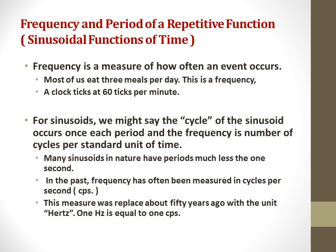Frequency is a measure of how often an event occurs. Most of us eat 3 meals per day. This is a frequency. The clock ticks at 60 ticks per minute. For sinusoids, we might say the cycle of the sinusoid occurs once each period, and the frequency is the number of cycles per standard unit of time.